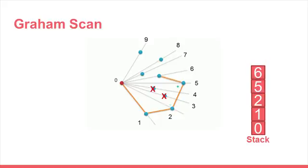Next point is 6. A left turn is made at 5 coming from 3. So we continue. The stack contains 0, 1, 2, 5, and 6.